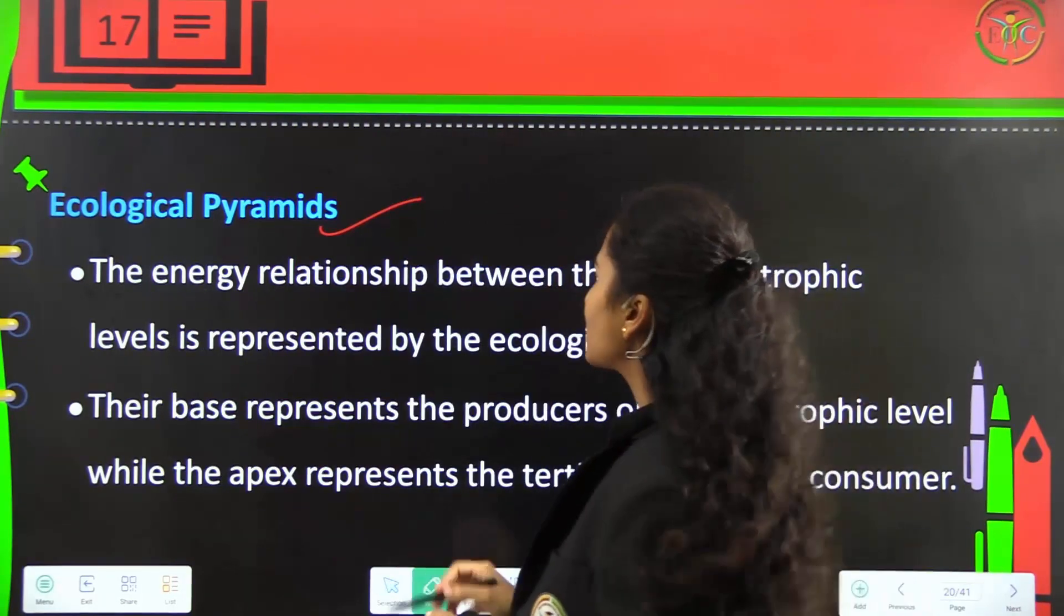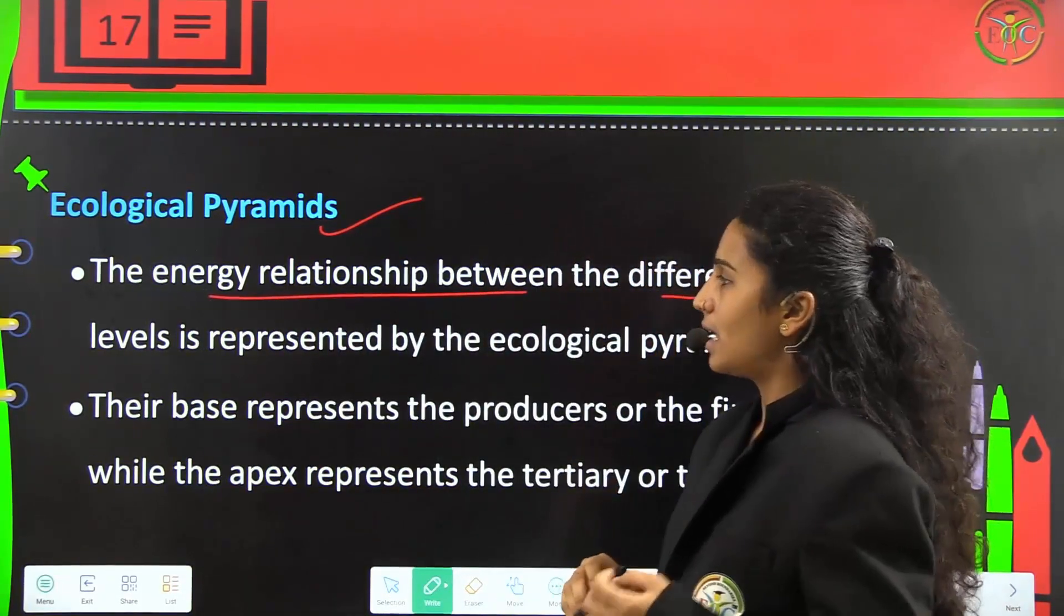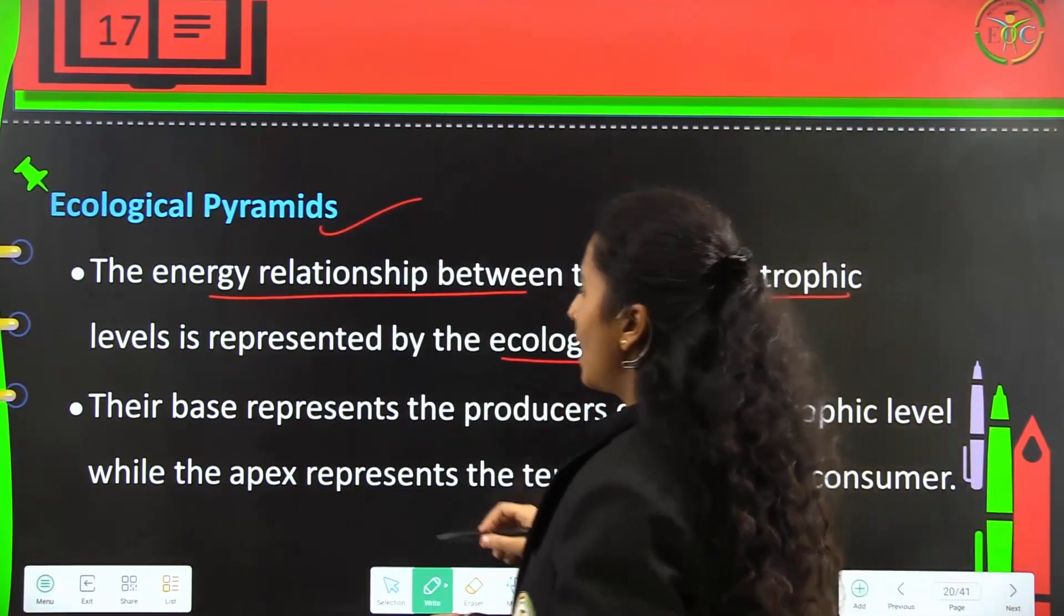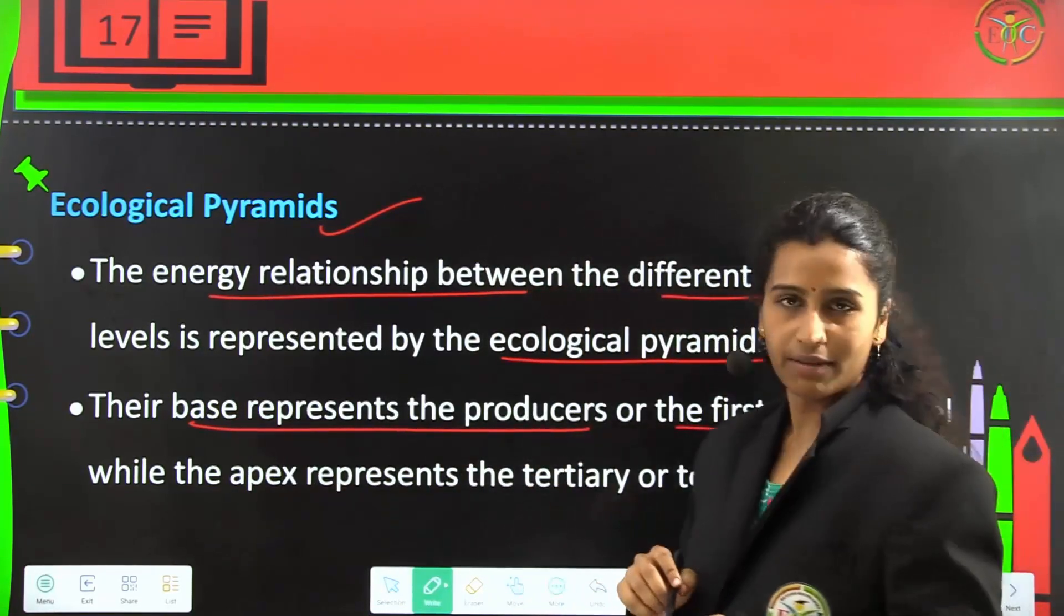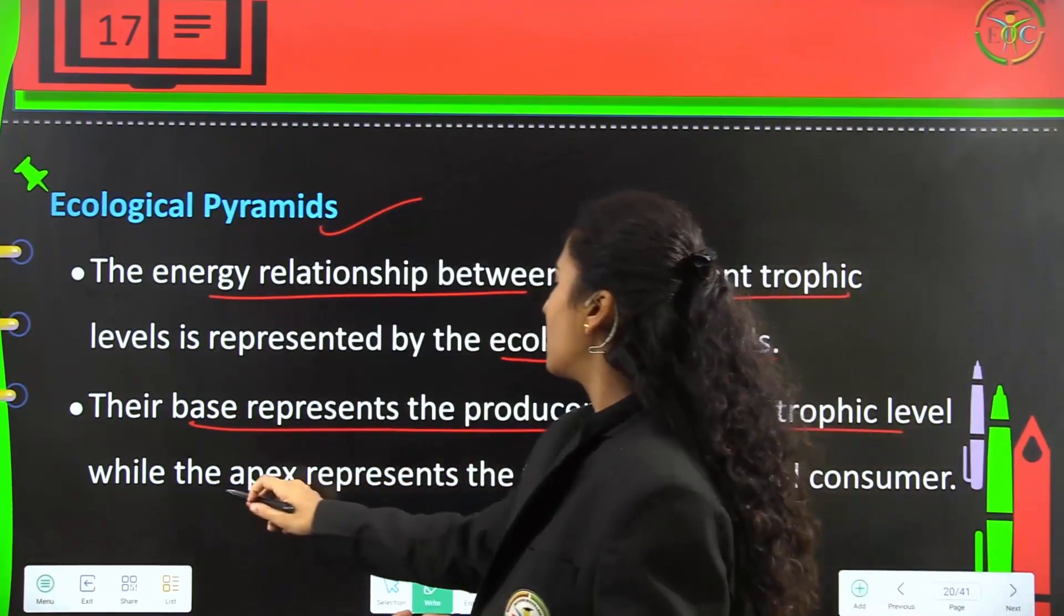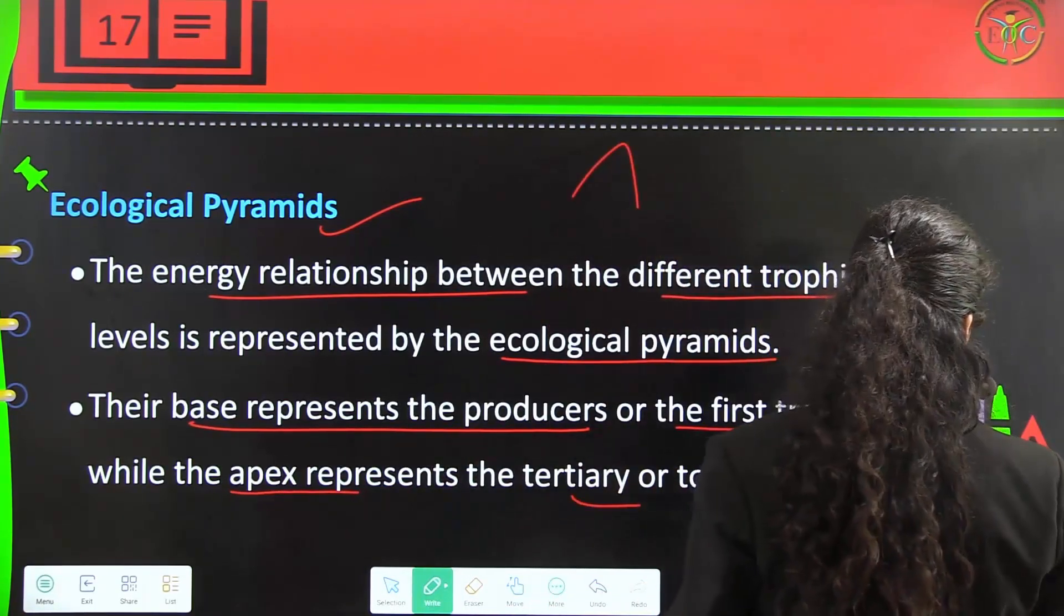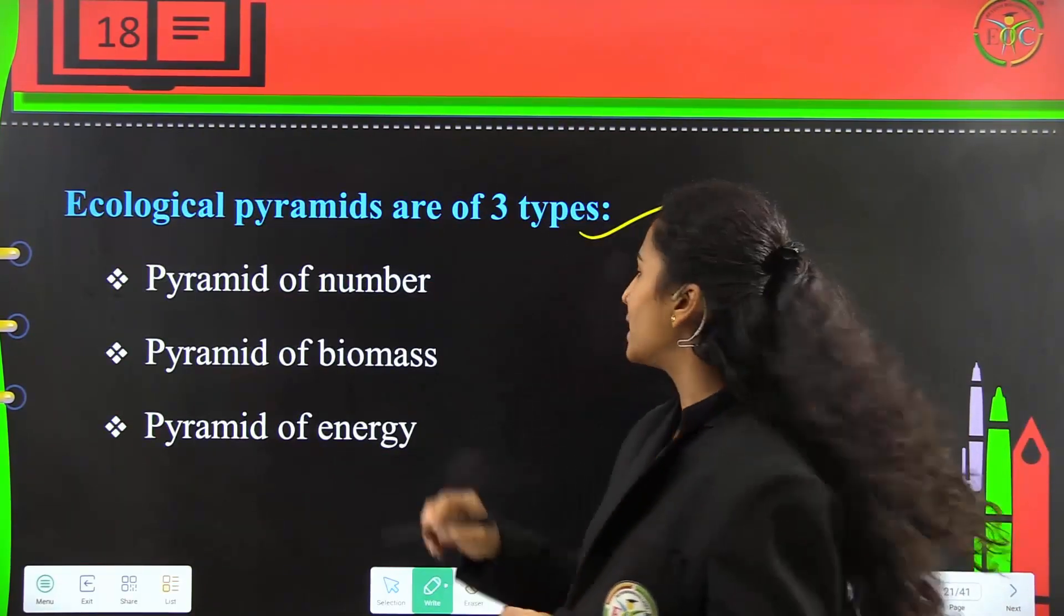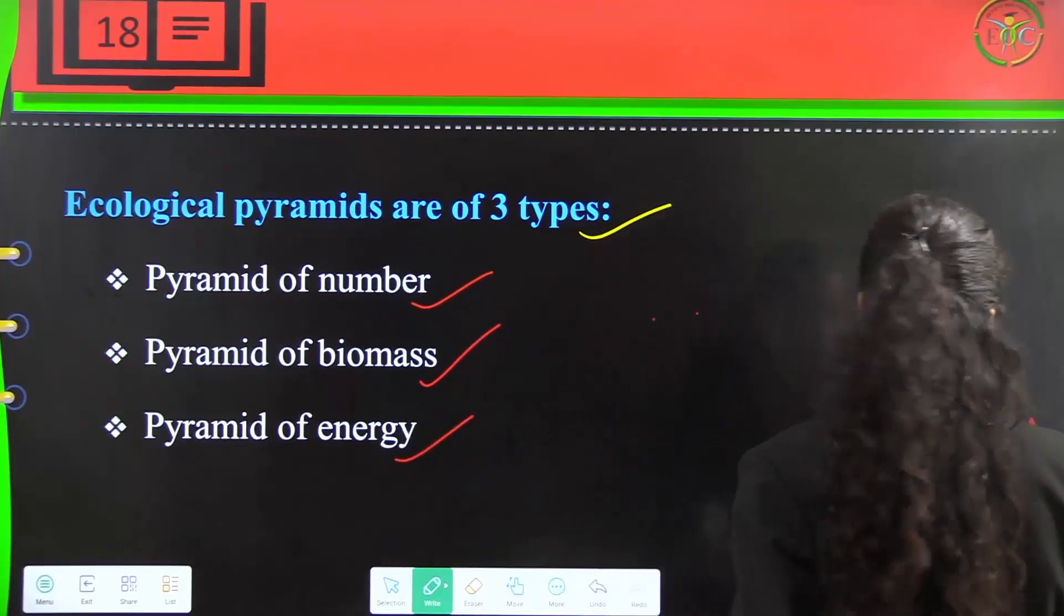Ecological pyramids: The energy relationship between different trophic levels is represented by ecological pyramids. Their base represents the producers or first trophic level, while the apex represents the tertiary or top-level consumers. There are three types: pyramid of numbers, pyramid of biomass, and pyramids of energy.